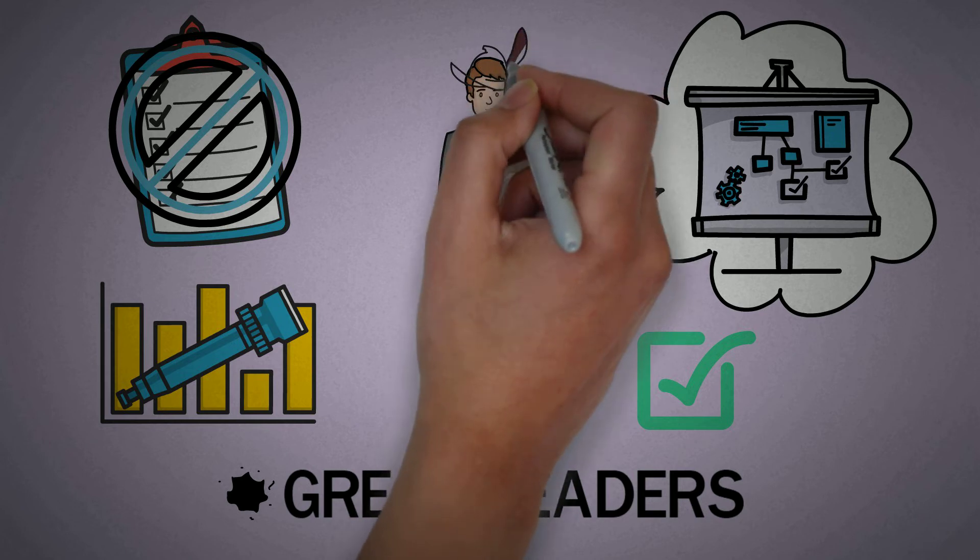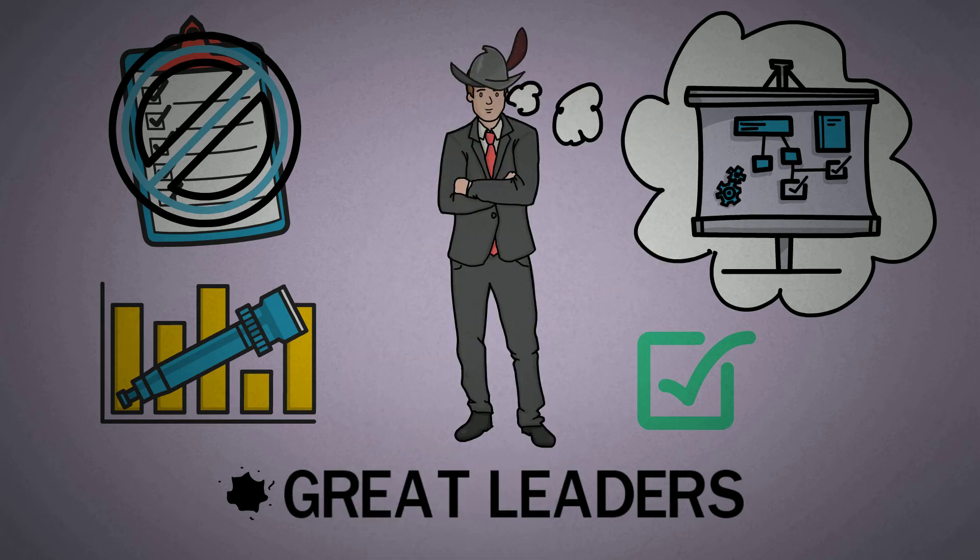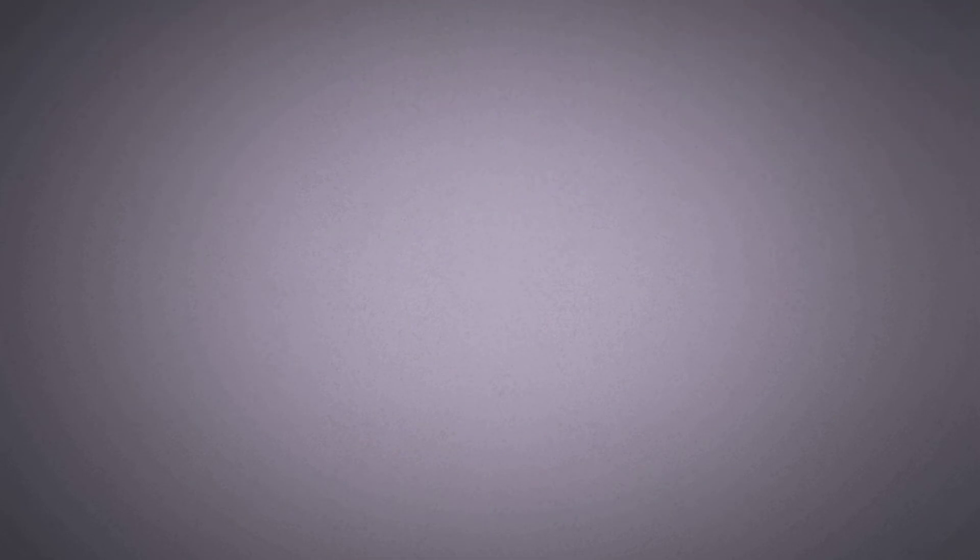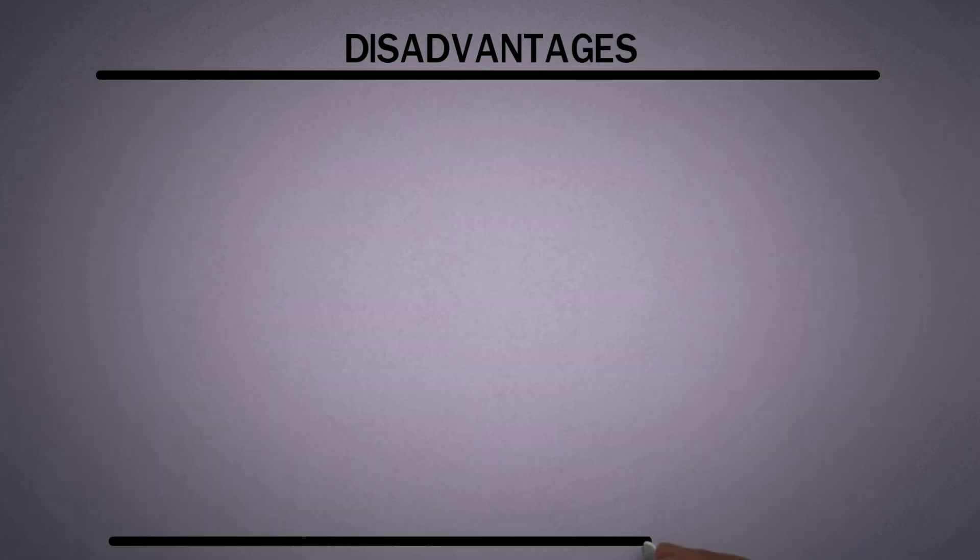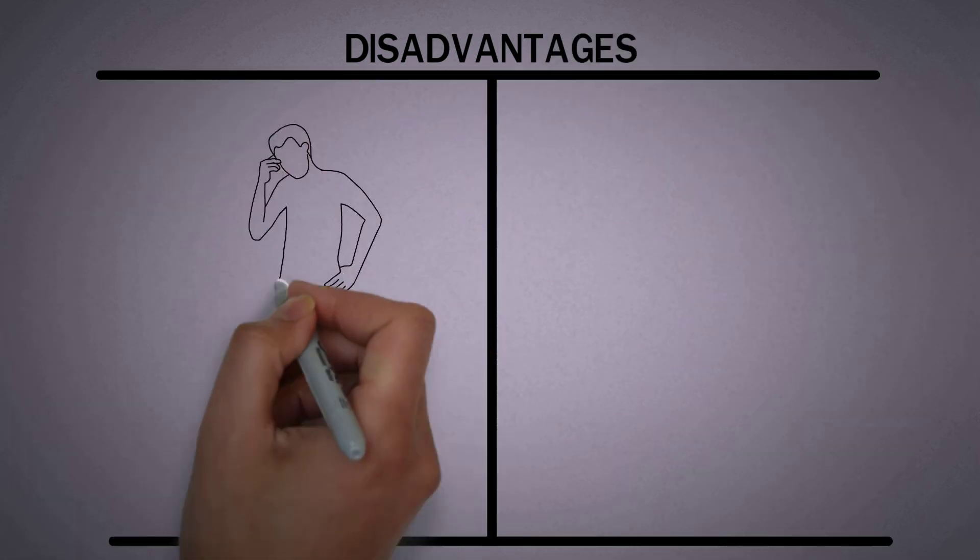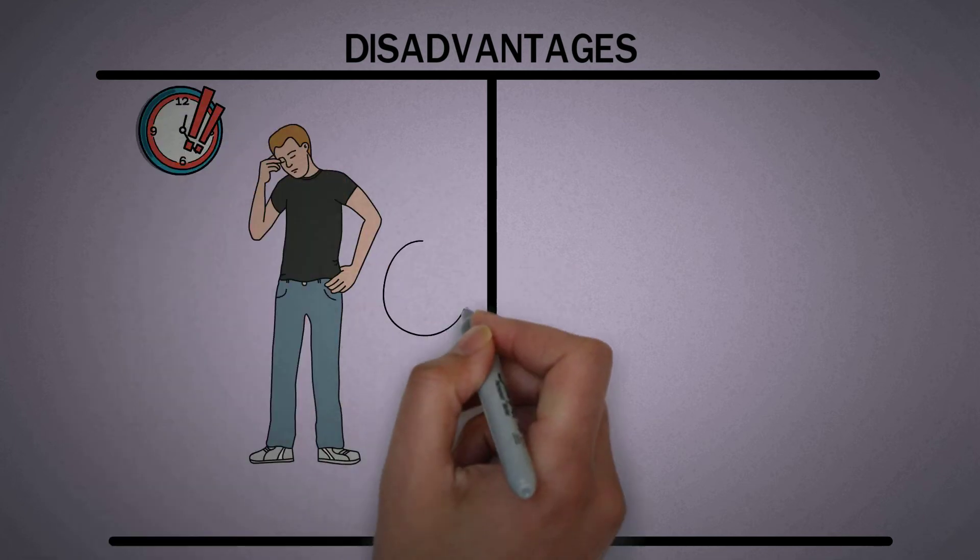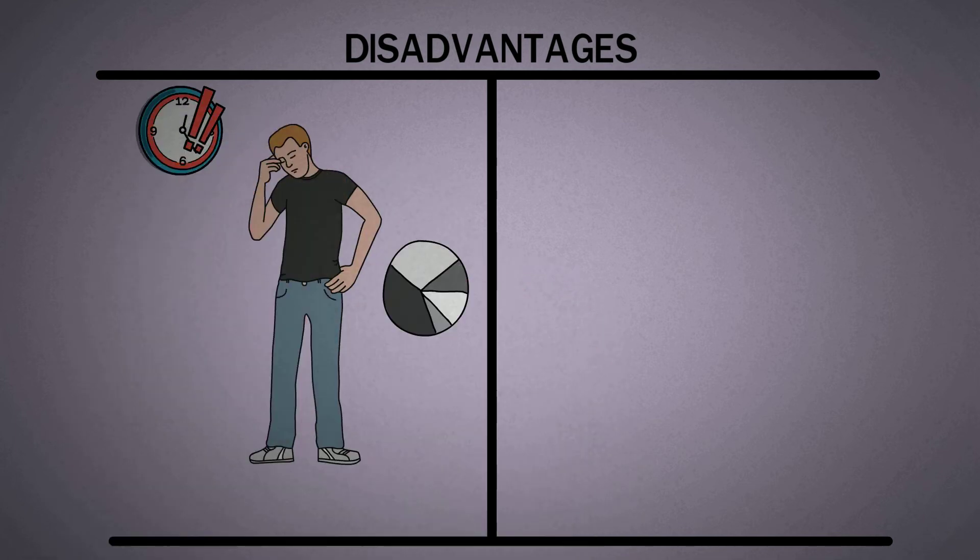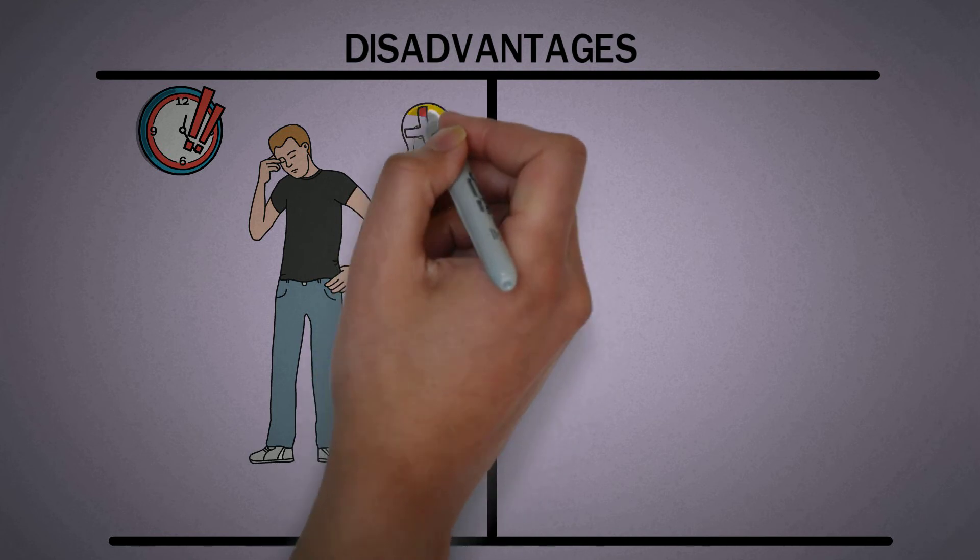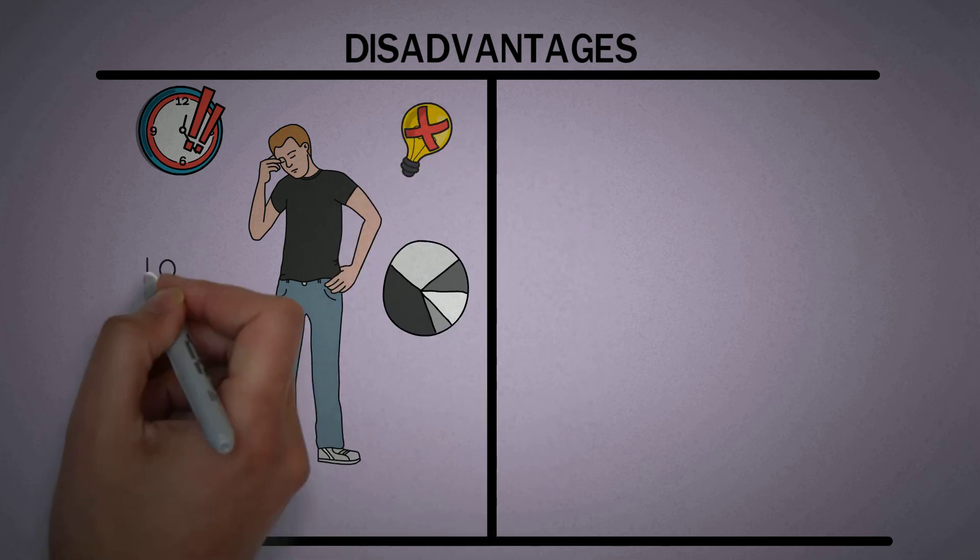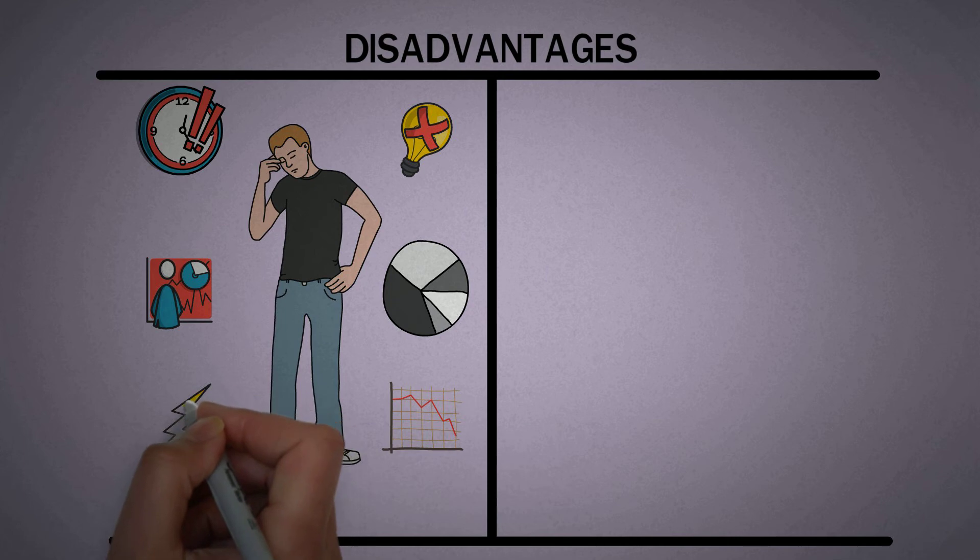But there are also some disadvantages to being a multipotentialite. So having many interests is a good thing. However, when you perform at a high level on all these different fields, you need a lot of brain power. Your mind is like a muscle and if you don't take care of it, it can lead to burnout.